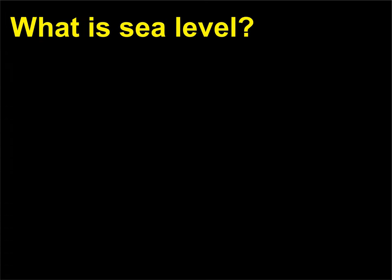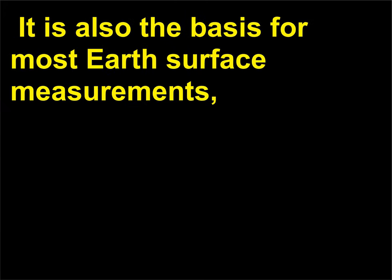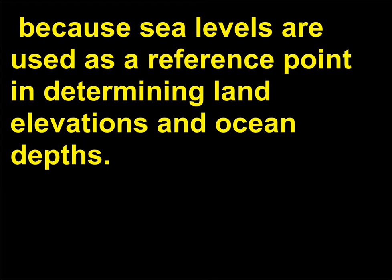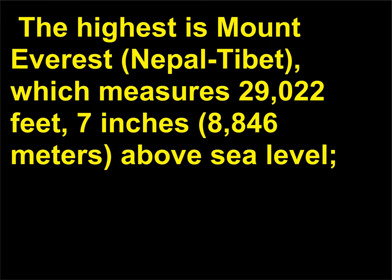What is sea level? Sea level is the height of the ocean's surface at a certain spot and depends on changing conditions. It is also the basis for most earth surface measurements, because sea levels are used as a reference point in determining land elevations and ocean depths. Scientists have averaged out the highest and lowest altitudes and depths from sea level locations. The highest is Mount Everest, Nepal–Tibet, which measures 29,022 feet, 7 inches (8,846 meters), above sea level.